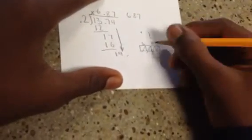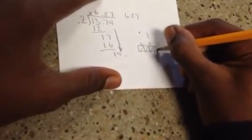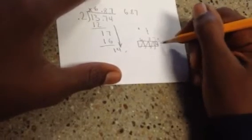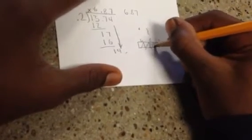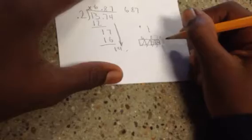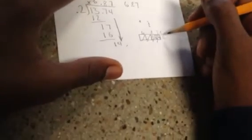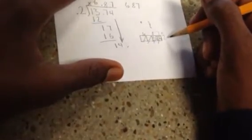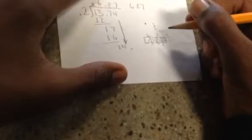So 2 times 7 is 14. 1, 4 here. 2 times 8 is 16. 6 here. And 2. 2 times 6 is 12. So drop that down. So you don't need this extra box.